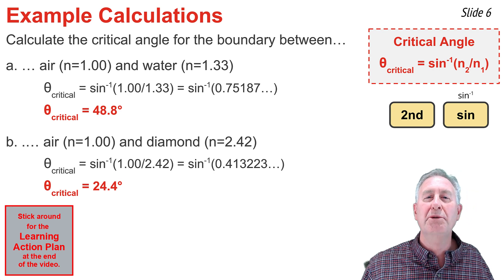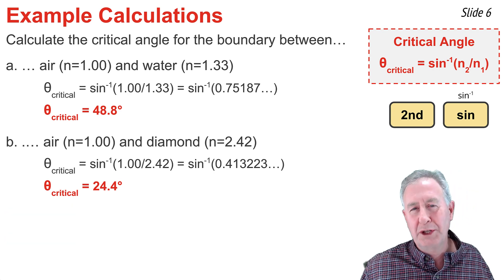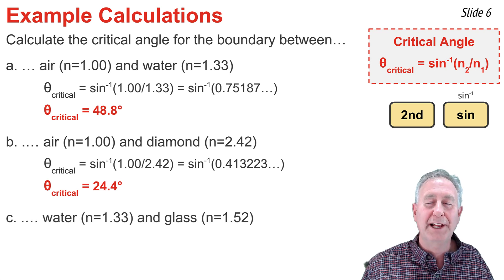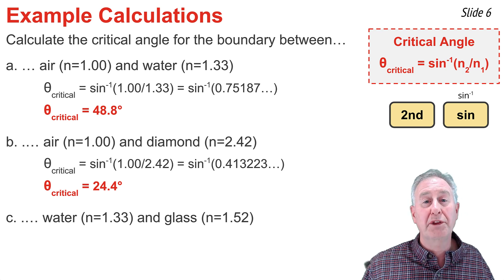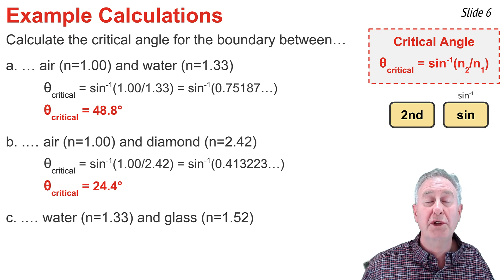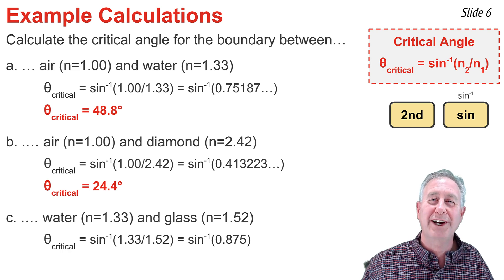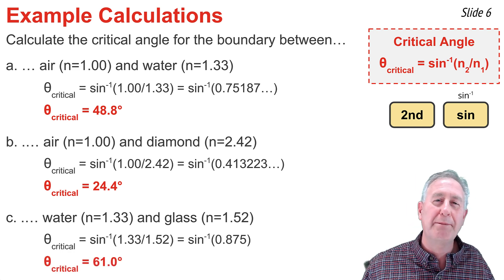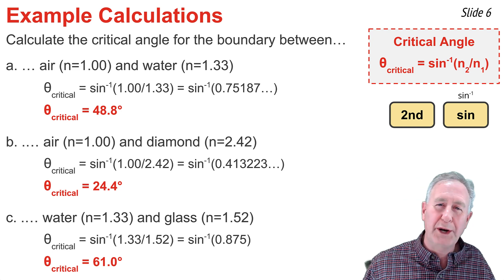It comes out to be 24.4 degrees. It's not important that air be part of the boundary — it could be the boundary between water and glass. Put the smaller index of refraction on top, divide by the larger, take the inverse sine, and you get about 61 degrees for the glass-to-water boundary.